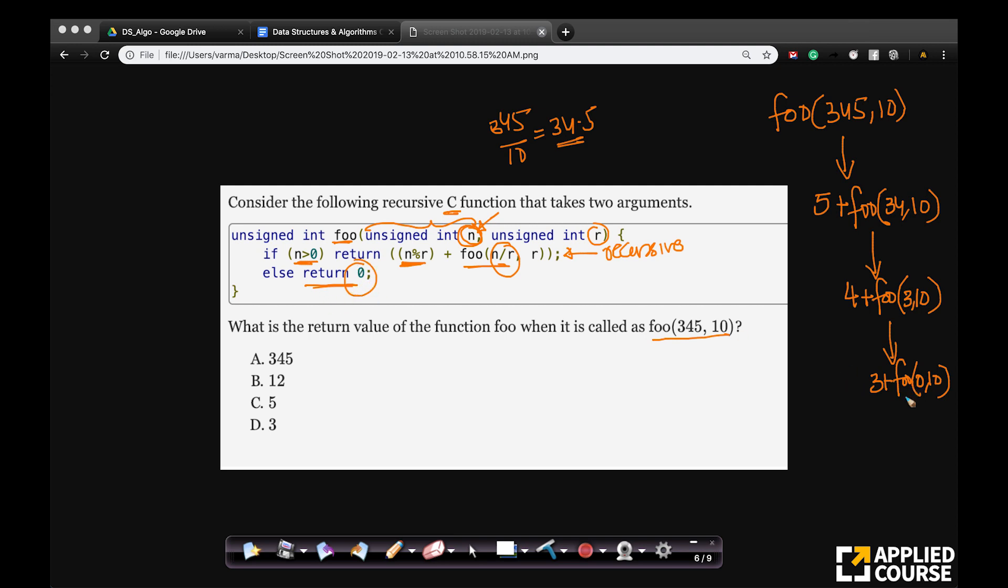So now let us return. This value is 0. This value is 0. 3 plus 0 is 3. So here what is returned here is 3.